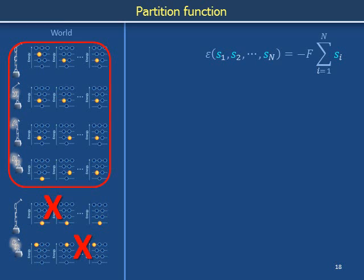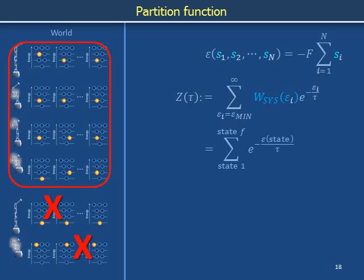Our goal is to calculate average properties of the chain corresponding to the states that the chain explores, and corresponding to the relative times those states are explored as the world as a whole explores its accessible configurations. As discussed in the previous slide deck, the partition function provides one way to begin such calculations. The partition function was defined as the sum over the Boltzmann factors corresponding to each energy level in the system, weighted according to the number of system states at each energy level — equivalently, a sum over the Boltzmann factors corresponding to each individual system state.